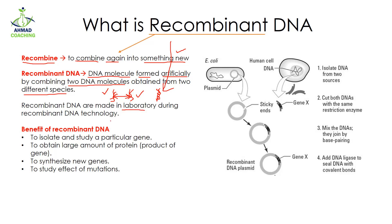Recombinant DNA is made in the laboratory during recombinant DNA technology. Here we can see we have an E. coli cell — E. coli is a bacteria — and here we have a human cell. In E. coli we have a circular DNA known as a plasmid, while in the human cell the DNA is present inside the nucleus. E. coli is one species and the human cell is another species.